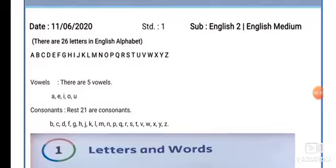There are 26 alphabets. A, B, C, D, E, F, G, H, I, J, K, L, M, N, O, P, Q, R, S, T, U, V, W, X, Y, Z. Right?